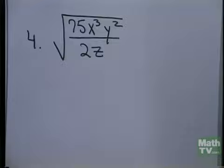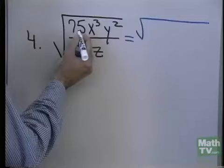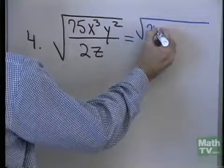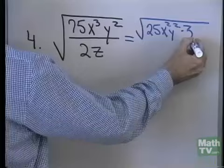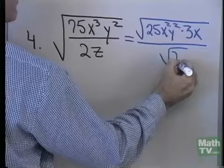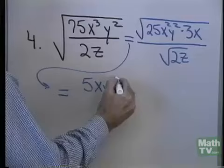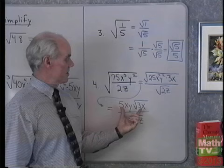Let's look at one last problem: the square root of 75x³y², all divided by 2z. First, I'll separate the numerator and denominator into two separate radicals. I'll look for the largest perfect square that divides the numerator, which is 25x²y², and that times 3x gives 75x³y². So 3 times 25 is 75, x times x² is x³, and I have y². That's all divided by the square root of 2z. Taking the square root gives 5xy times square root of 3x, all divided by square root of 2z.